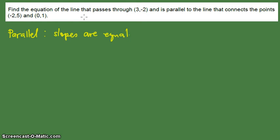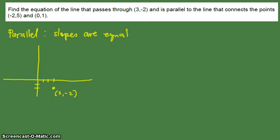Let's visualize the problem by plotting the points. Suppose we have the x-y plane and we have the point (3, -2) — that's 1, 2, 3 on x and 1, 2 on y (negative). So this is the point (3, -2). There is a line passing through this point — it can be in this way, it can be in this way, it can be in this way.